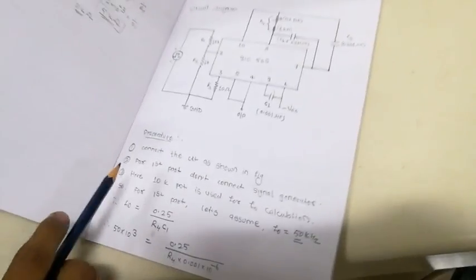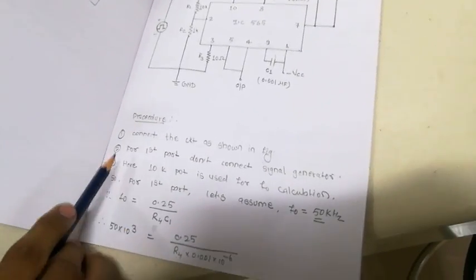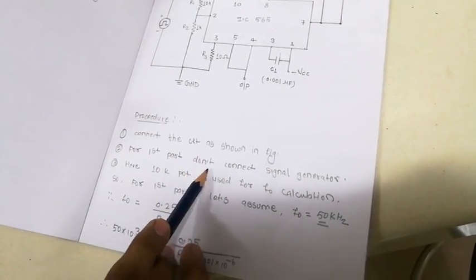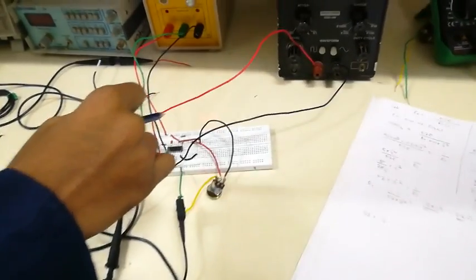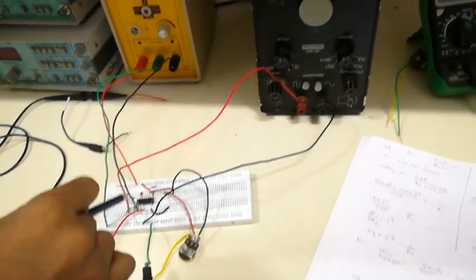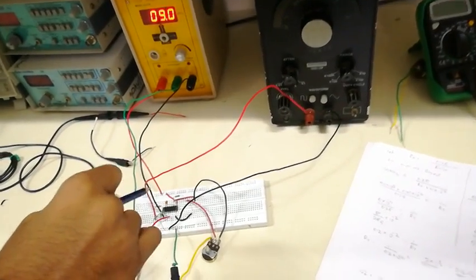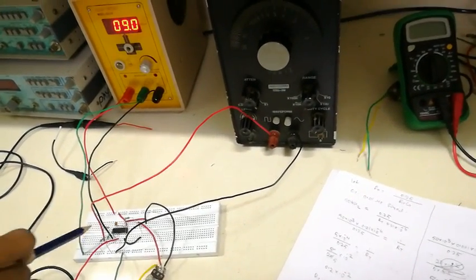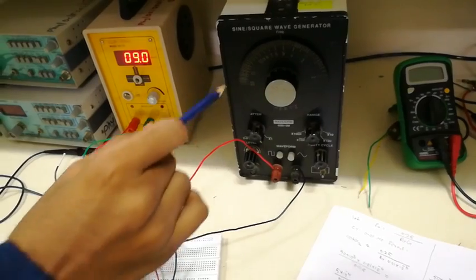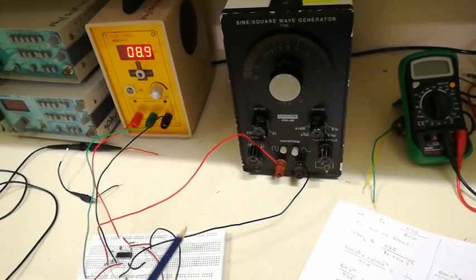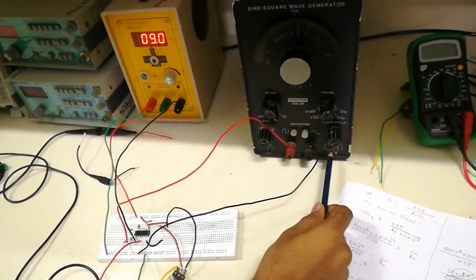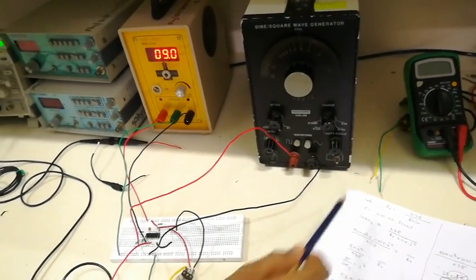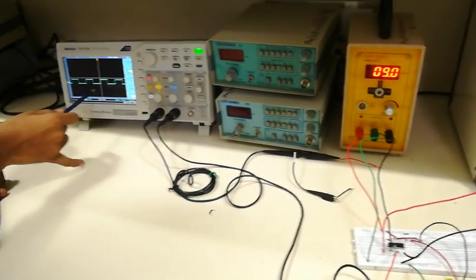In this practical there are two parts. For the first part, do not connect the signal generator. This circuit is also called an astable multivibrator, hence it automatically produces an output. So you don't need to connect the signal generator for the output — the signal generator is off and still we get an output.